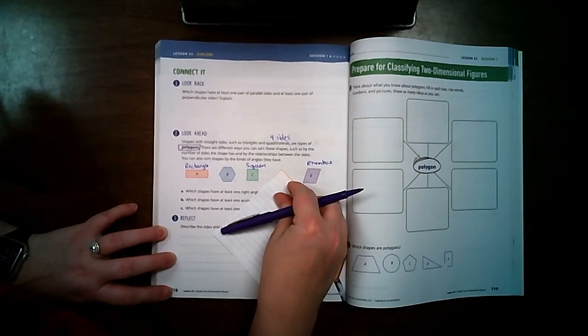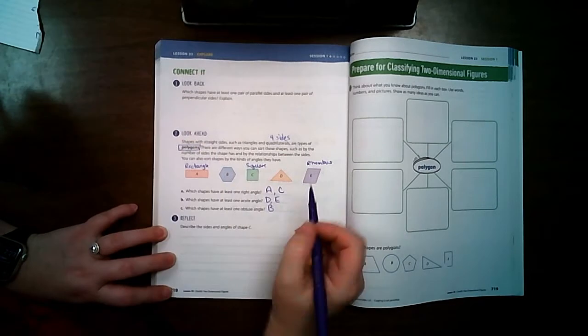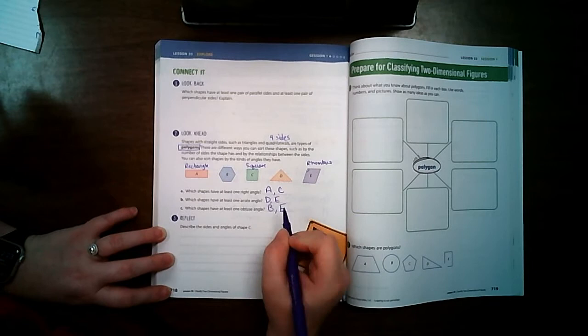But I don't think... Oh, that looks like a right angle. And those are both acute angles, so that one doesn't. But over here, this right here is an obtuse angle. So B and E.